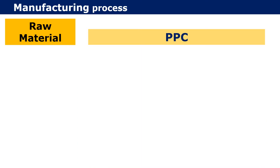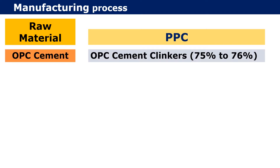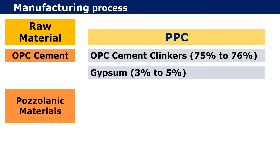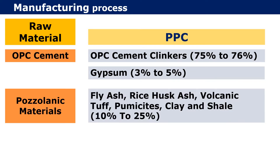The raw materials used to manufacture PPC are OPC cement clinkers at 75 to 76 percent, gypsum 3 to 5 percent, and pozzolanic material — which can be fly ash, rice husk ash, volcanic tuff, pumices, clay, and shale — ranging between 10 to 25 percent. All these materials are mixed and ground to obtain Portland Pozzolana Cement.